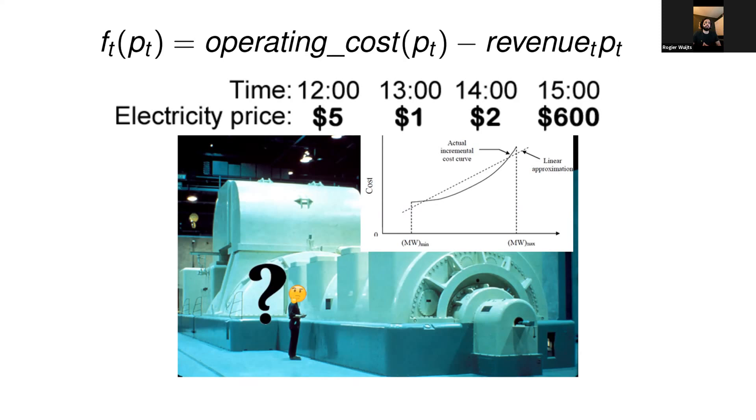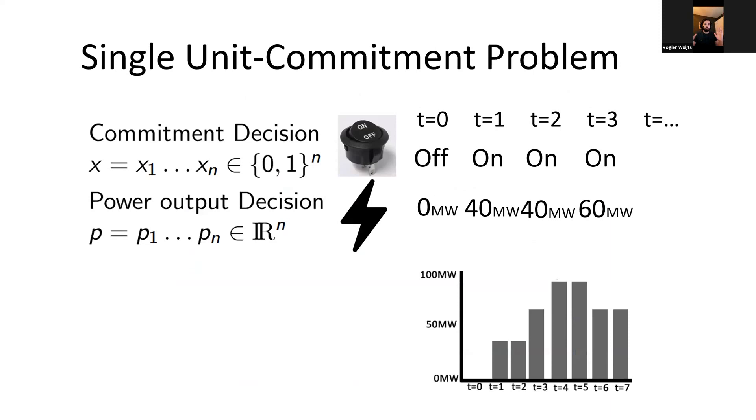Then you can make a cost function f_t(p_t) that takes a power output level and returns the cost. The cost is the operation cost, so the fuel cost you have minus the electricity price you get for providing that amount of energy. The single unit commitment problem is for a single unit finding the cost optimal schedule. A solution is a schedule with commitment decisions - the generator for every time step can either be on or off, plus power output decisions.